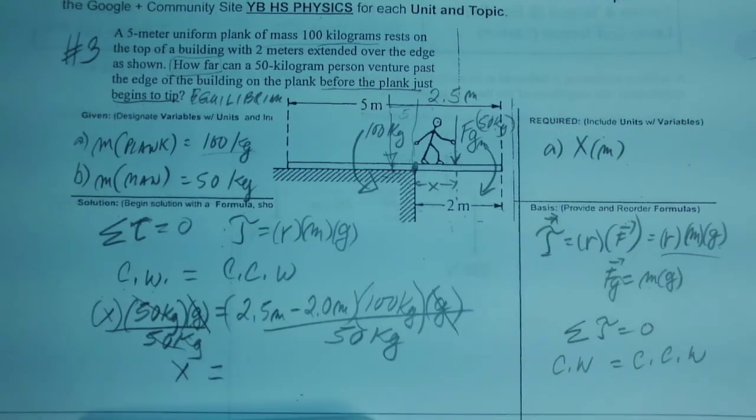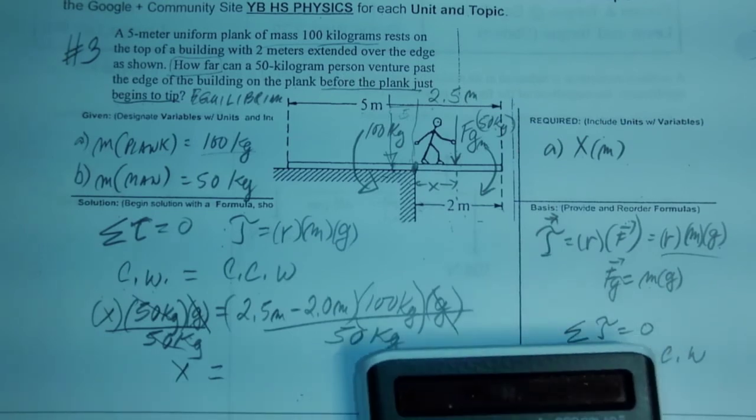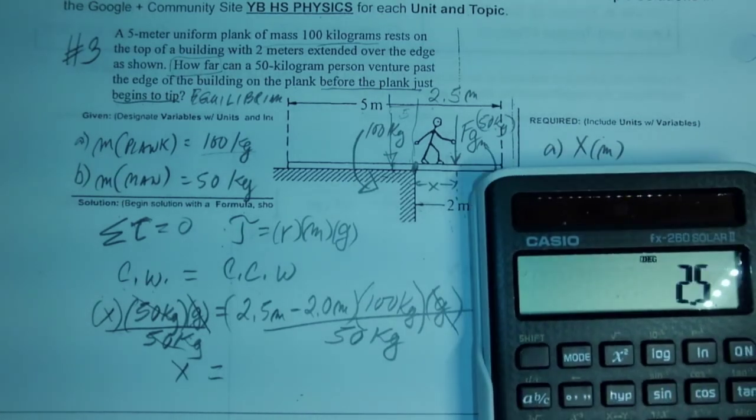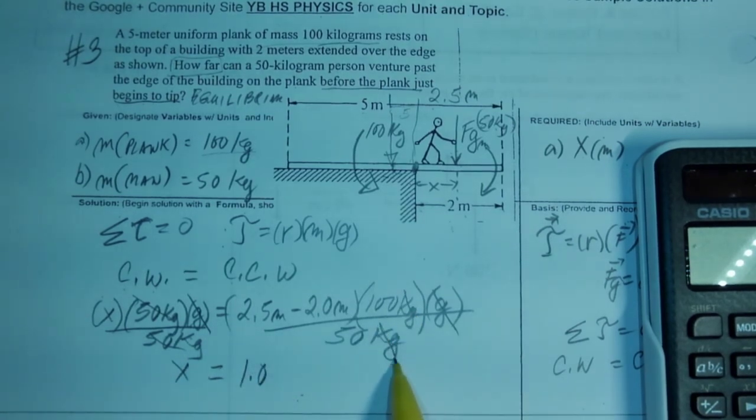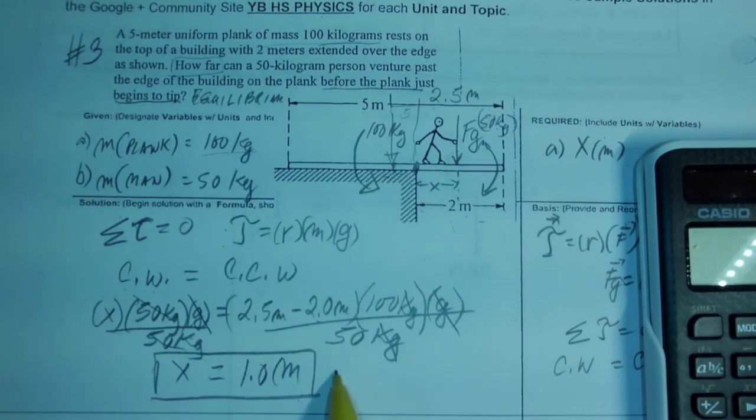So it is 2.5 minus 2 times 100 divided by 50. And the answer is x is 1.0, and kilogram and kilogram cancel, so it's meters. And I've done this twice, so check.